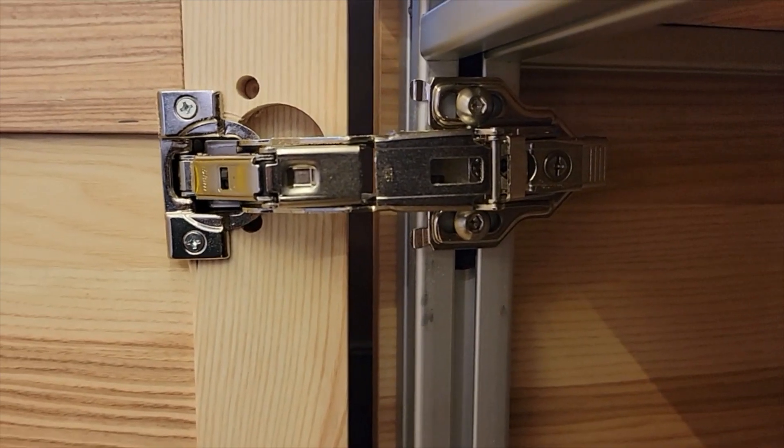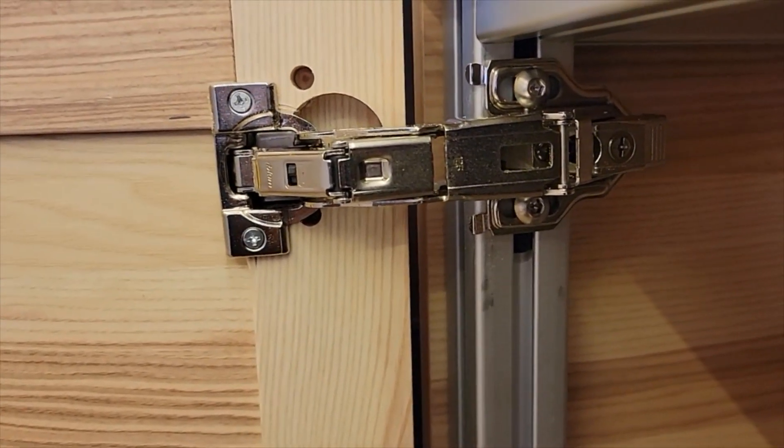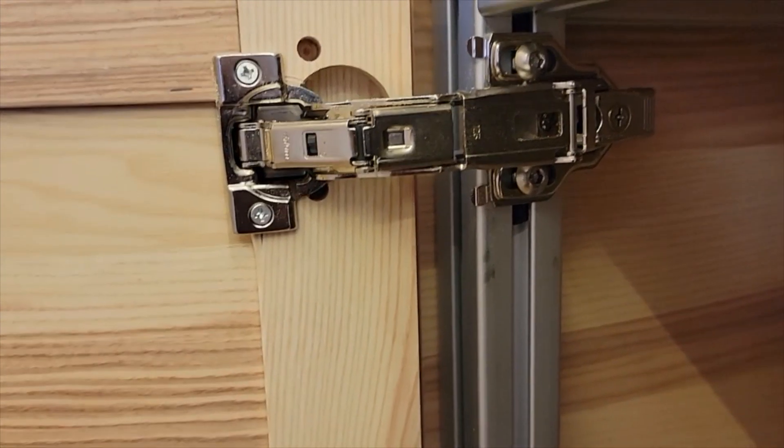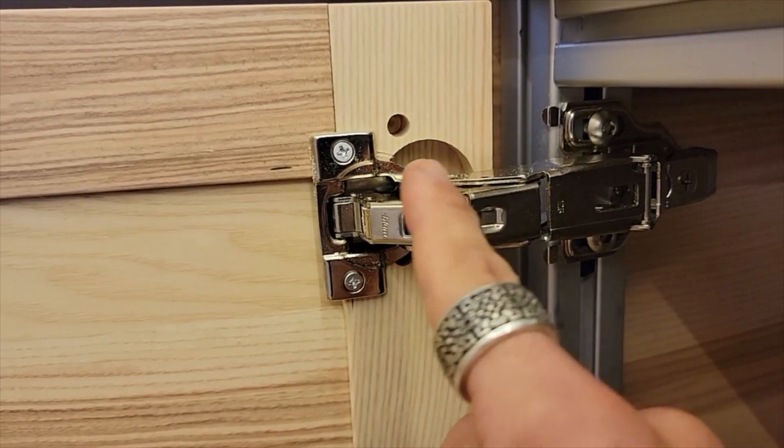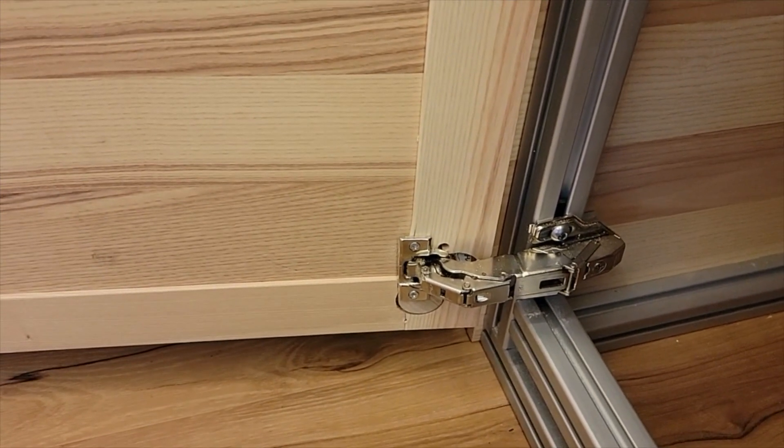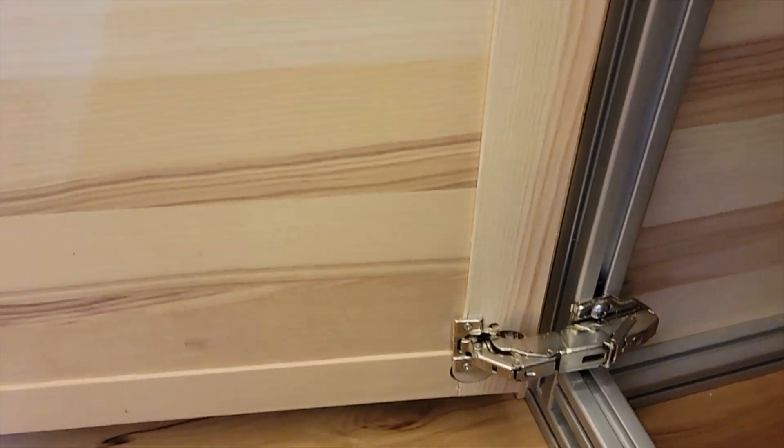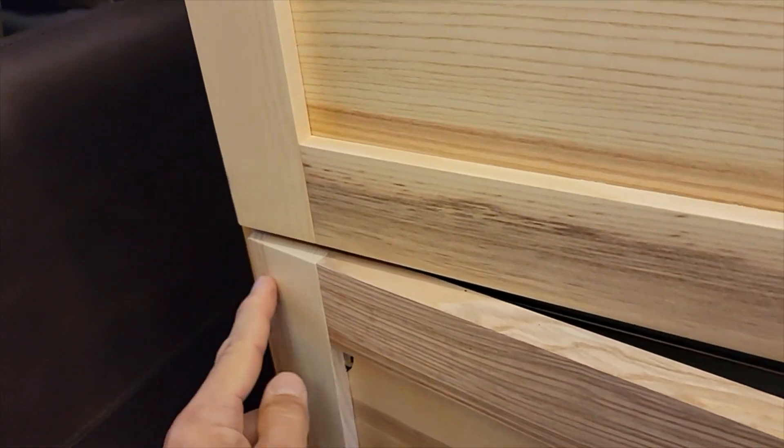But again you can see the hinge plate and the hinge are just locked on just like normal, but the difference here was we had to re-drill a new hinge hole three quarters of an inch into the door, and same thing down here. What that does is when the door closes, it pushes the door out three quarters of an inch and you get full coverage.